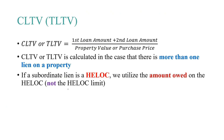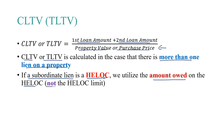To calculate the CLTV or TLTV, you take the first loan amount plus the second loan amount and divide by the property value or the purchase price, whichever is lower. The CLTV or TLTV is calculated when there is more than one lien on a property. If a subordinate lien is a HELOC, we use the amount owed on the HELOC, not the HELOC limit.